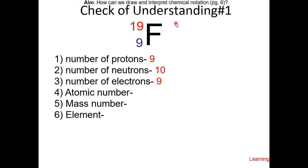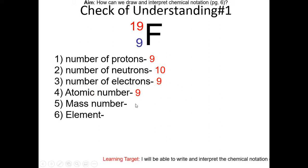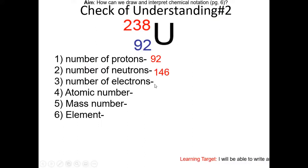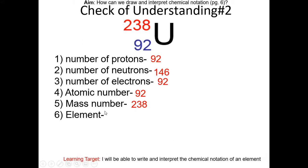Now work on the check of understanding. For fluorine: the atomic number is 9, the mass number is 19, and the element is fluorine. For check of understanding number 2: the number of protons is 92. Neutrons: 238 minus 92 equals 146. The number of electrons, assuming it's neutral, is 92. Atomic number is 92, mass number is 238, and the element is uranium.